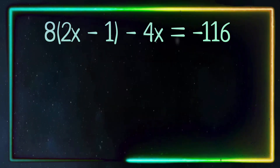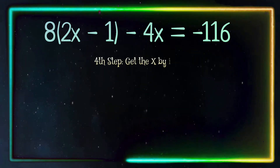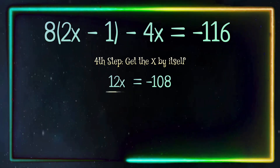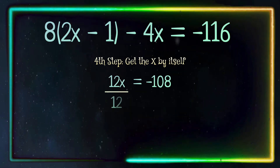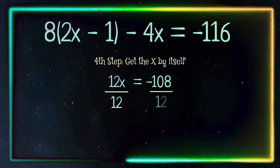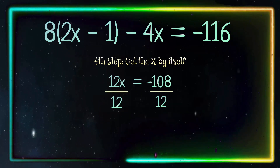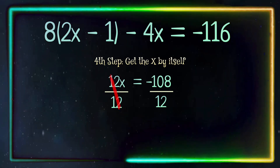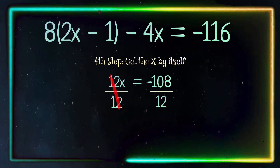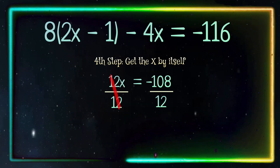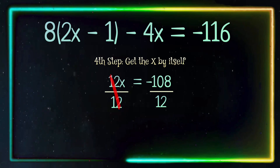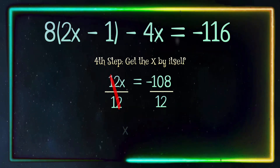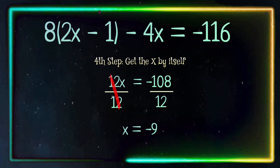Last step, we want to get x by itself. So we are going to divide both sides by 12. The 12 gets canceled out over here, leaving x by itself. And negative 108 divided by 12 equals negative 9.